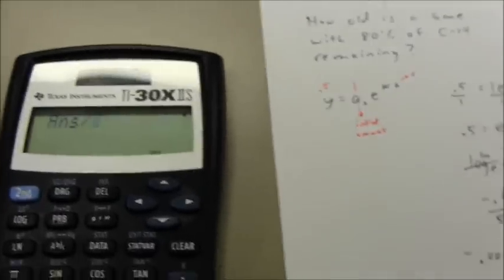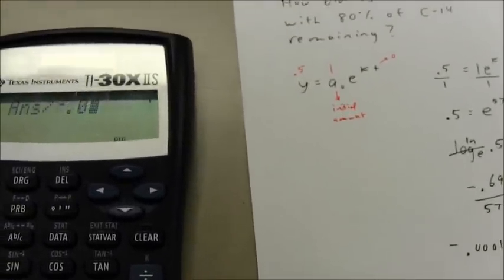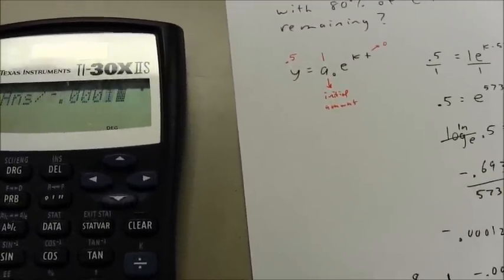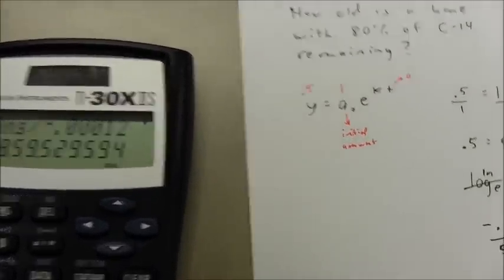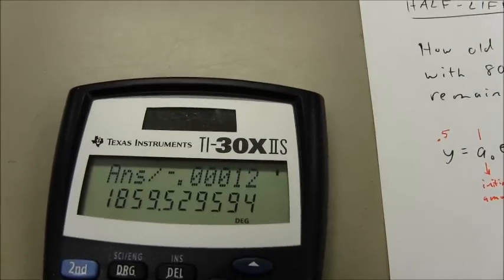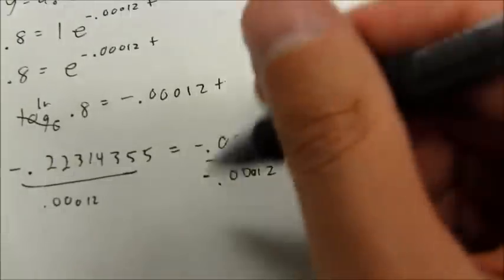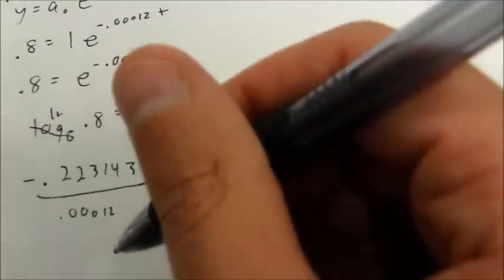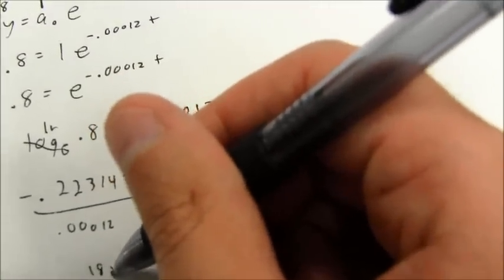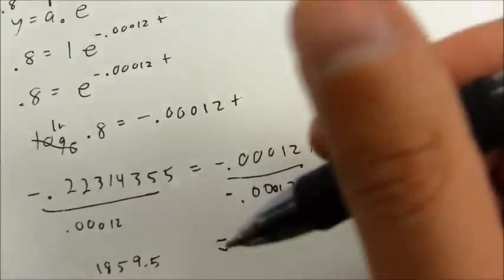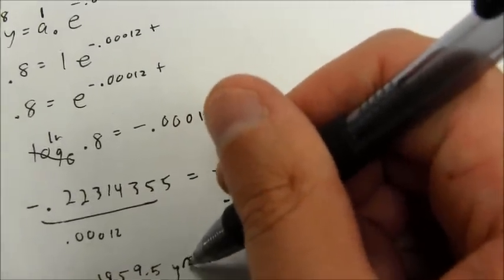I can divide both sides by that value. So, I'll divide by negative 0.0012t. And I get a final answer of approximately 1,859.52 years. So, T is approximately 1,859.5 years. And that would be the age of the bone that I've discovered.